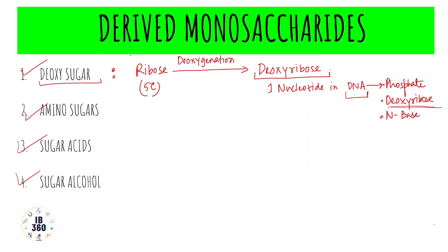Deoxyribose is not a simple monosaccharide — it is a deoxy sugar, a derived monosaccharide. Next are amino sugars. In amino sugars, monosaccharides have an amino group (NH2). For example, glucosamine forms chitin, fungal cellulose, hyaluronic acid, and chondroitin sulfate.